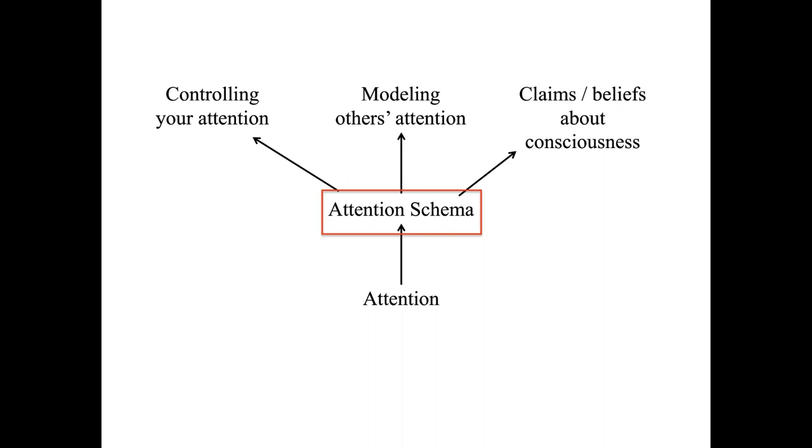From the technology point of view, AST may help us build artificial intelligence that is more capable at strategically controlling its own attention and more capable at social interaction. And as a fun side effect, AST may lead machines to think they have consciousness, machines that self-describe as having conscious experience. I would argue in the same way that the giant human neural network up here thinks that it has conscious experience.